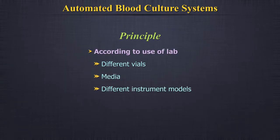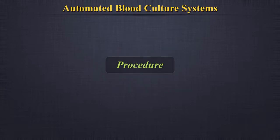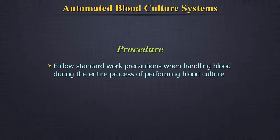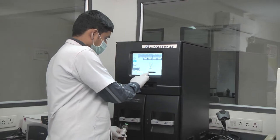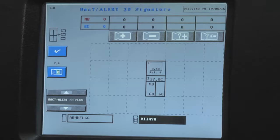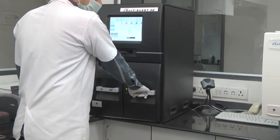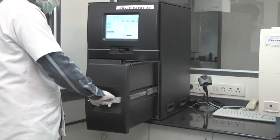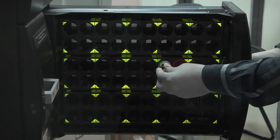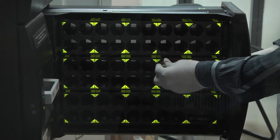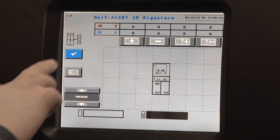Different vials, media, and different instrument models are available according to the use of the lab. Procedure. Lab personnel must strictly follow standard work precautions when handling blood during the entire process of performing blood culture. To load bottles, touch the load bottle icon, read the barcode of the bottle meant for loading, and type in the patient identification, sex, age, type of specimen, etc. as required. Open any of the drawers with green lights flashing and load the bottle randomly in any cell with a green flashing light. Close the drawer and touch the tick mark on the monitor.